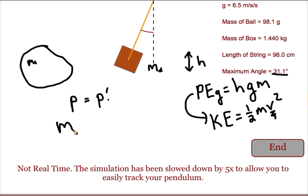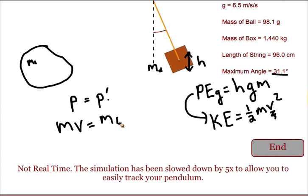So we take the mass of just the ball times its velocity, which we don't know, and set it equal to the total mass of our system and the velocity of the system right after the collision. This will allow us to find the only unknown, which is the original velocity of the ball before the collision.